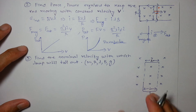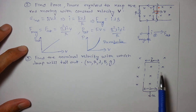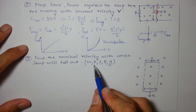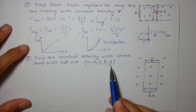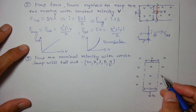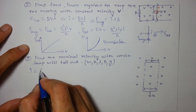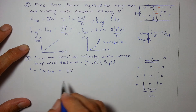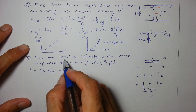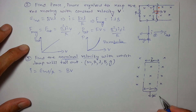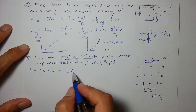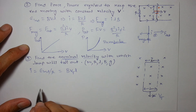The last question in this video: find the terminal velocity with which a loop will fall out of the magnetic field region. Given are the mass, resistance of the loop, length of the side, the magnetic field value, and acceleration due to gravity. Terminal velocity is the velocity attained after some time, after which the object continues to move with that constant velocity. Let the terminal velocity be V_t.